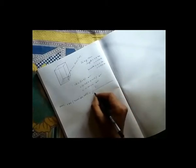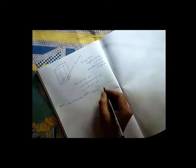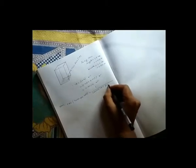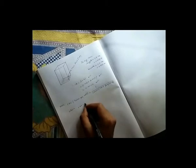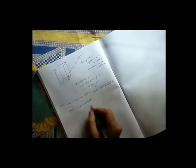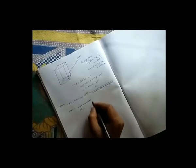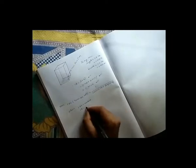Now I am calculating the turns per volt, TPV, which is equal to 1 by 4.44 into B into core area into frequency. Where 4.44 is the constant, and CA for core area and frequency we take 50 Hz.